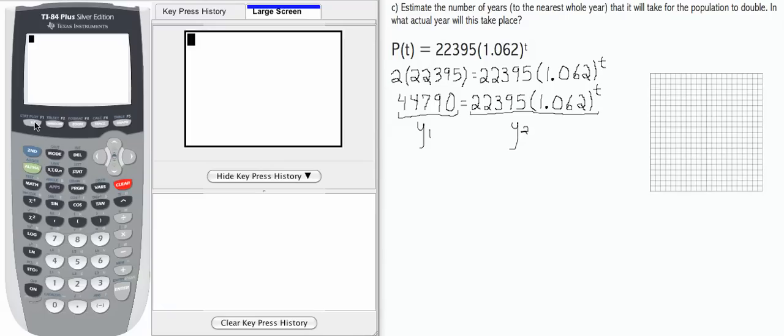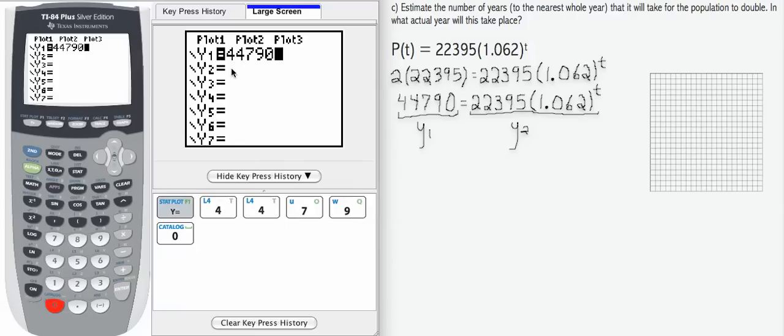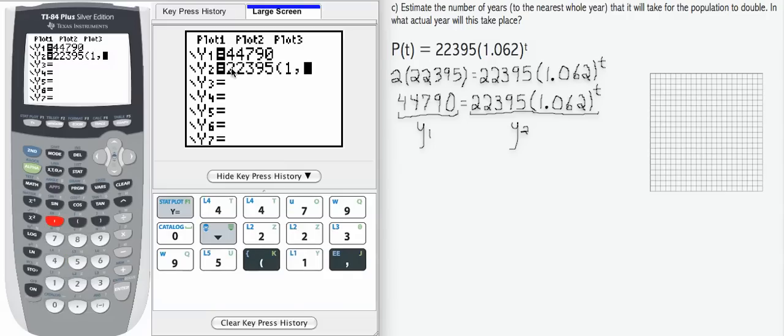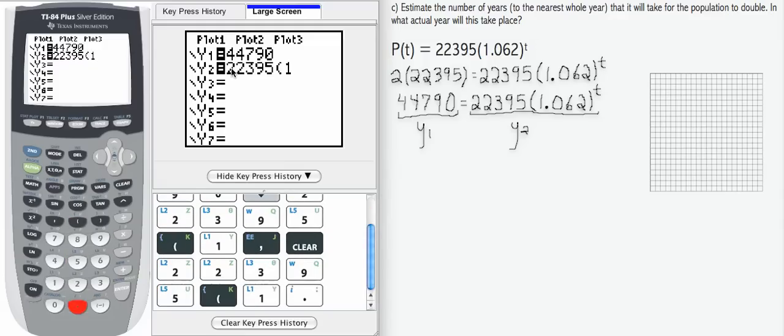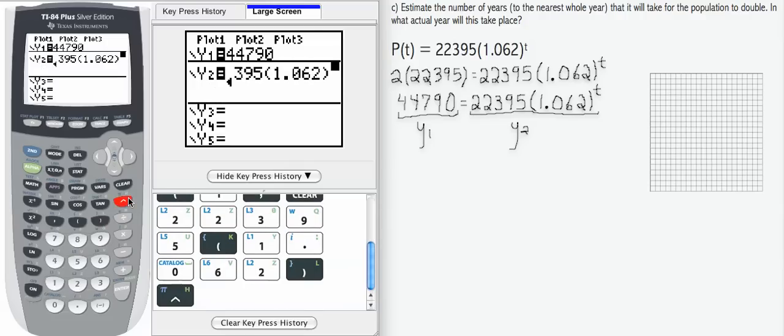Let's go to our y equals in our calculator. And then we're going to enter 44,790 for y1. Then for y2, we're going to enter 22,395 times 1.062, and then exponent, can't do t, we need to do x.